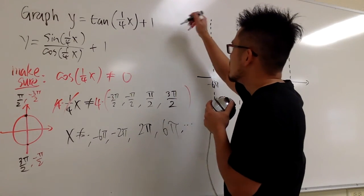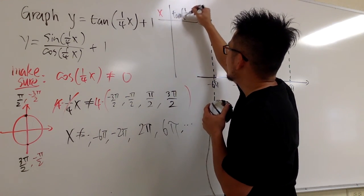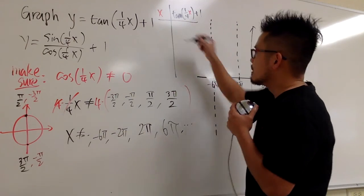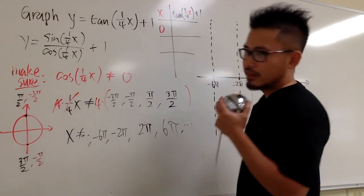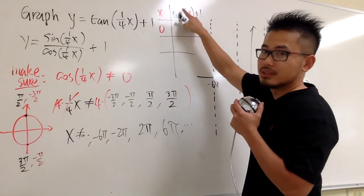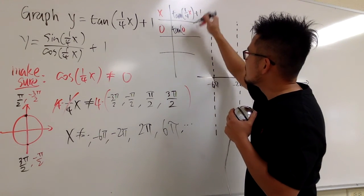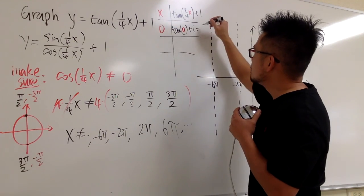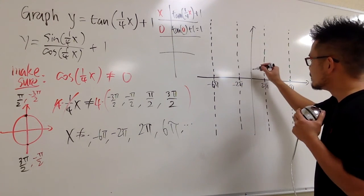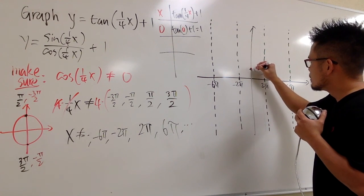A table of values will help us find specific points. We have x and tangent(1/4 x) + 1. Starting with x = 0: tangent(0) = 0, plus 1 gives 1. So the point (0, 1) is on the graph.